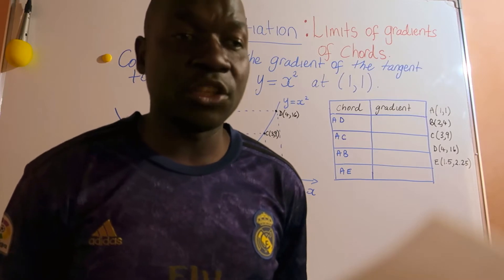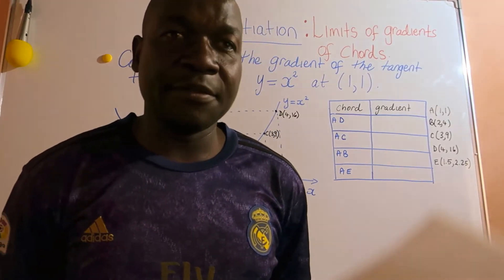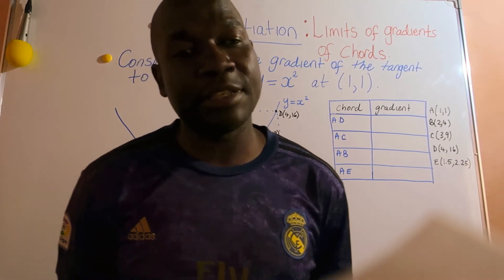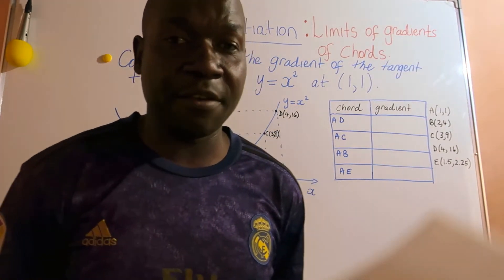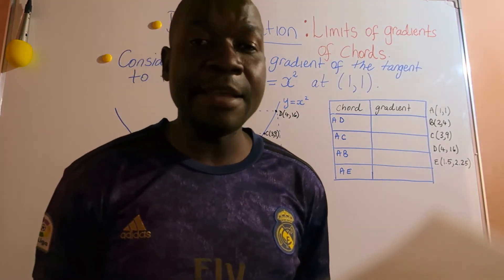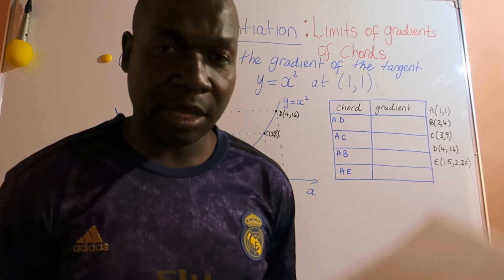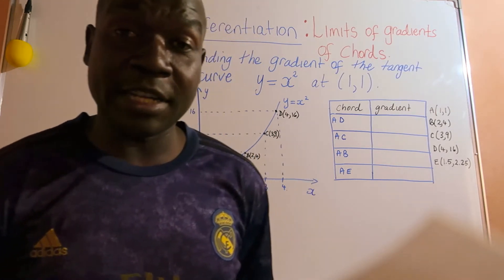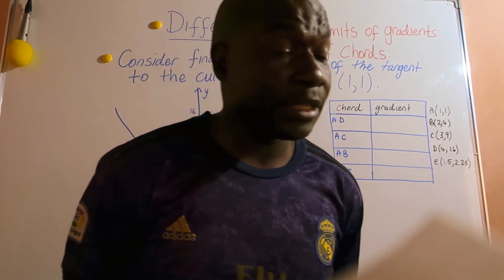Our main objective in today's tutorial: we are looking at the introduction to differentiation. The first objective, this is something that came into the syllabus, it's something that's new. It's understanding the gradient of a curve at a point as the limit of the gradients of a suitable sequence of chords.